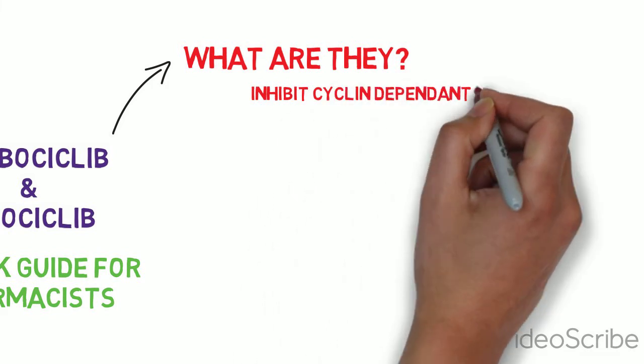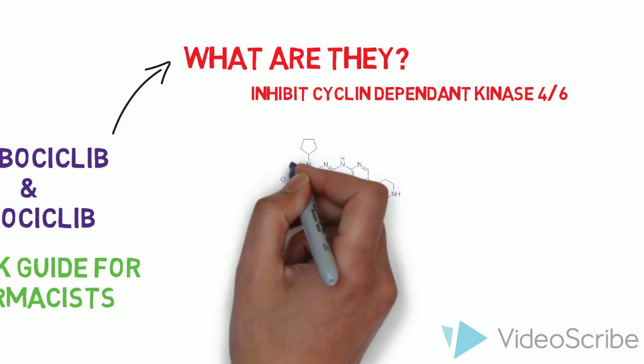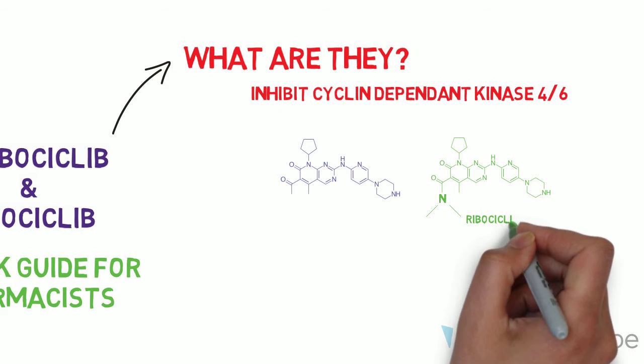Palbocyclib and ribocyclib are cyclin dependent kinase 4 and 6 inhibitors. They are chemically very similar.